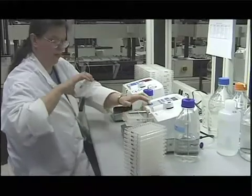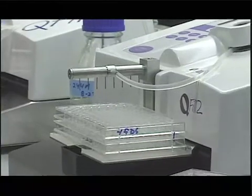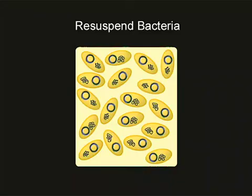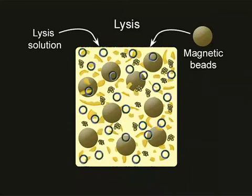Exactly. And the technicians here in Prepping Core will add a resuspension buffer to those cells. The pellets are then resuspended and vortexed, and the plates are then placed on the plate tray. The robot begins by adding a magnetic bead solution that also contains a lysis solution.